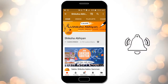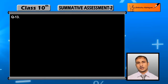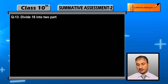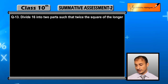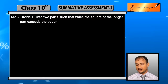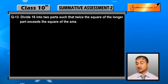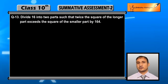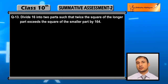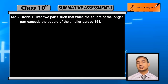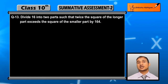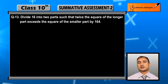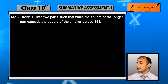Divide 16 into two parts such that twice the square of the larger part exceeds the square of the smaller part by 164. आपको 16 के ऐसे दो पार्ट करने हैं कि जो बड़ा वाला पार्ट हो उसके square का twice यानि double, smaller के square से 164 ज़्यादा हो।